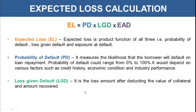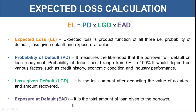Loss Given Default is the loss amount after deducting the value of collateral and the amount recovered. For example, if a loan of five lakh rupees is given and the collateral amounts to two lakh rupees, the bank already holds that collateral as security, so the loss given default would be three lakh rupees. If the borrower has also paid one lakh in installments, then the loss given default reduces to two lakh rupees — the amount remaining after deducting both the collateral value and the amount repaid.